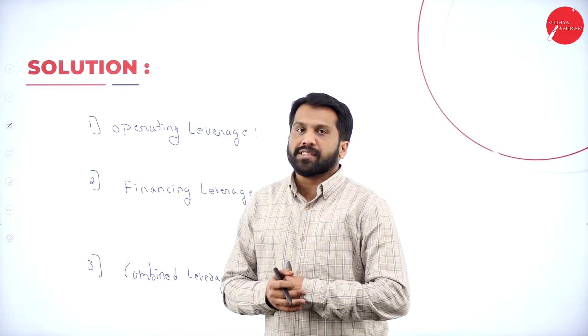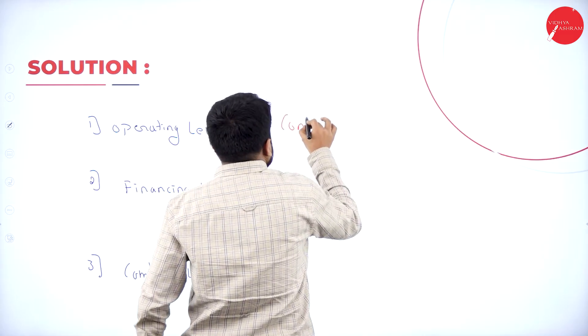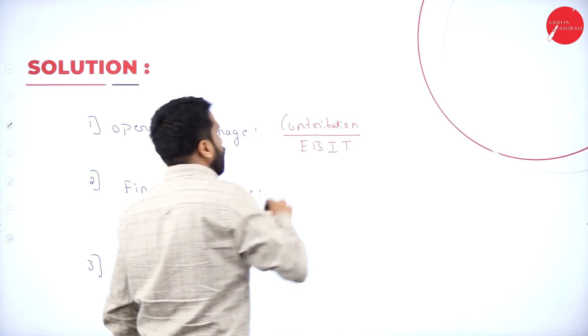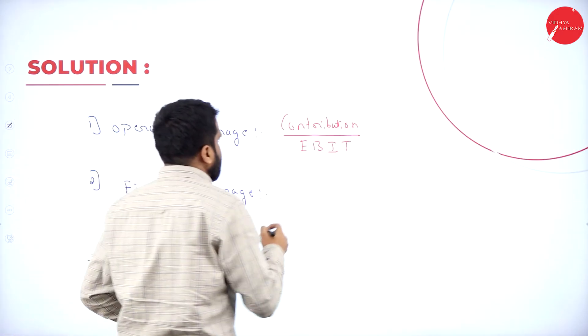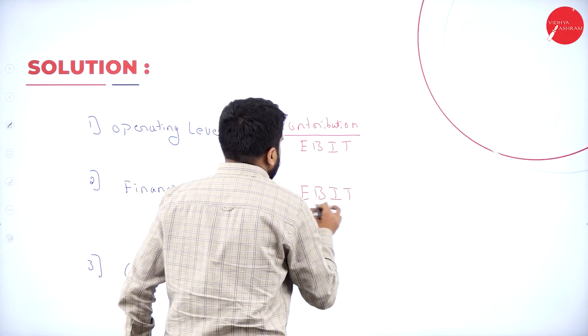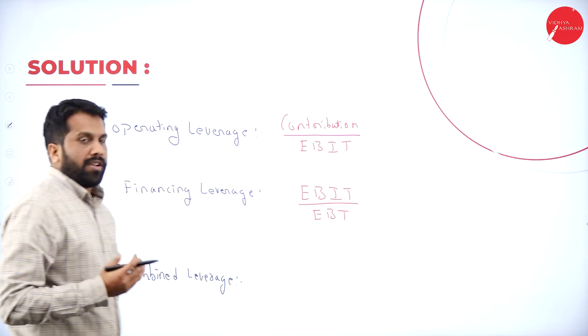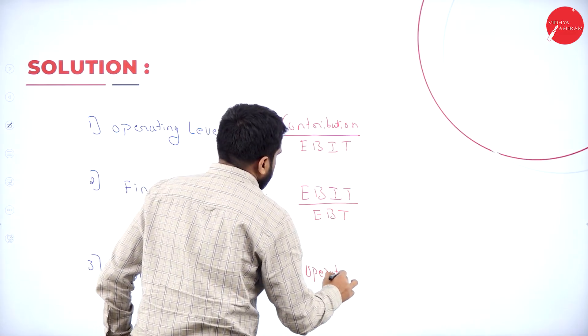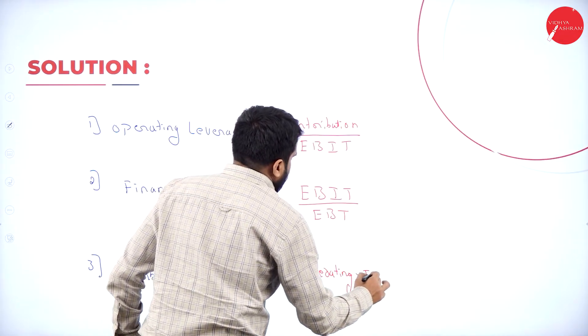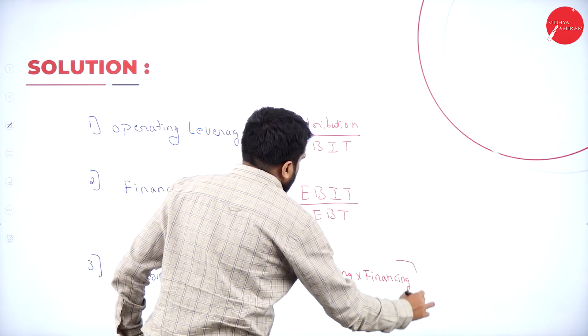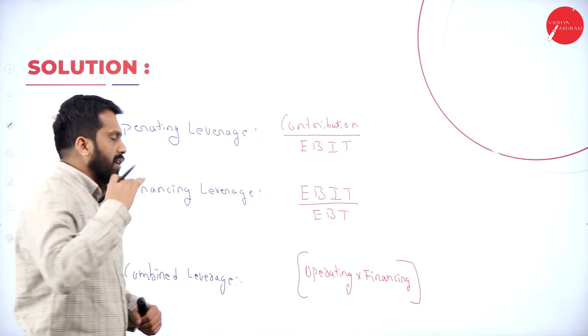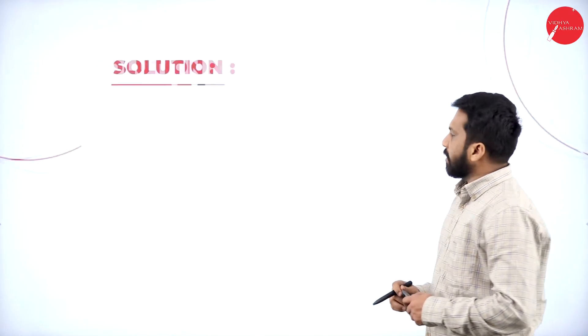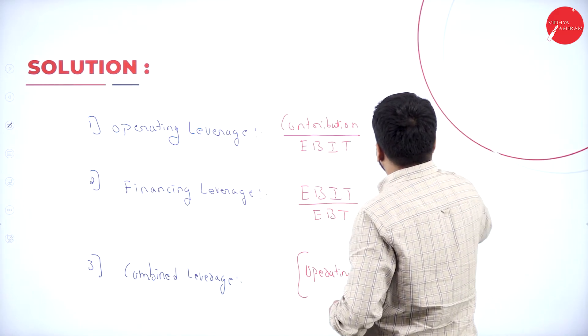And the last one Combined Leverage. Don't go in-depth. You will get only basic problems. In this, now Operating leverage. What is the formula? The formula is Contribution divided by EBIT. This is the formula for operating Leverage. What is your contribution? In this, 4 lakh. 4 lakh divided by what is your EBIT, 2 lakh. So, it will be how much? 4 lakh divided by 2 lakh.